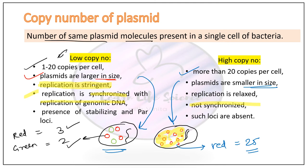Another important point for low copy number plasmids is that they possess stabilizing and par loci. These loci are responsible for the segregation and assortment of plasmids into daughter cells, ensuring equal distribution of plasmids during cell division. In high copy number plasmids, such loci are totally absent, meaning the distribution of plasmids during cell division is random.